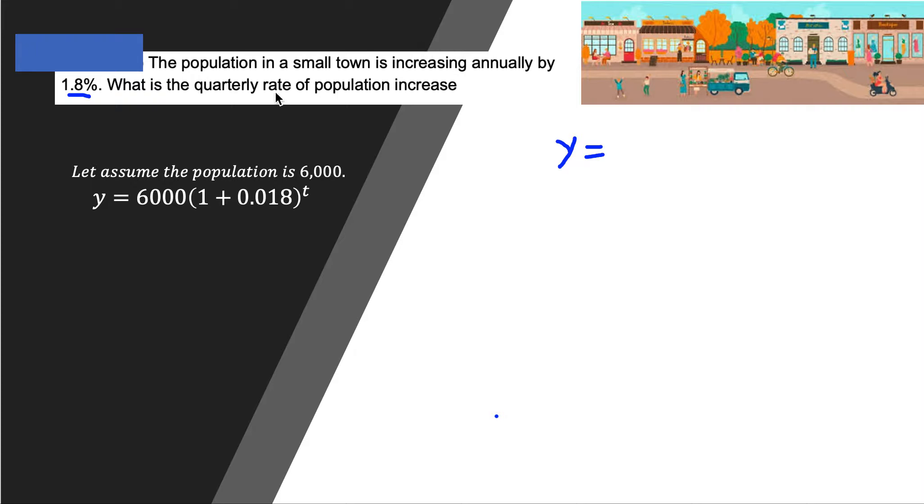The population in a small town is increasing annually by 1.8%. What is the quarterly rate of population increase? We don't have the population of the town, so let us assume the population is 6000. We know when we have exponential growth...